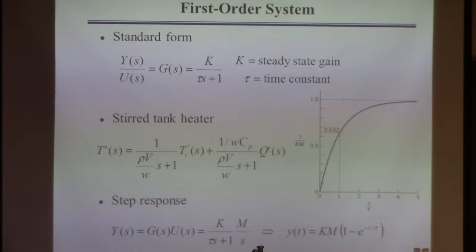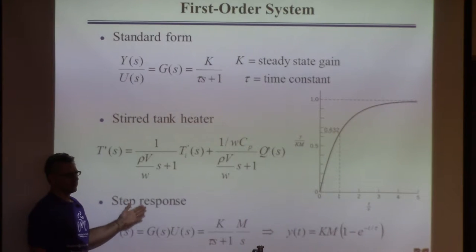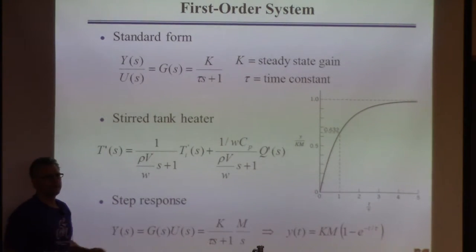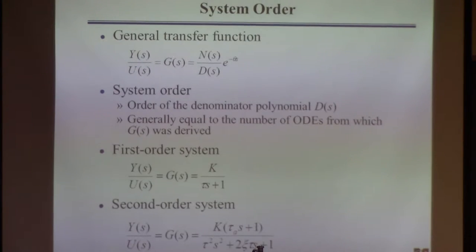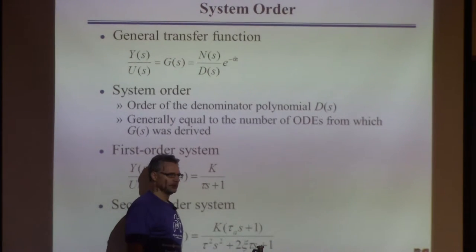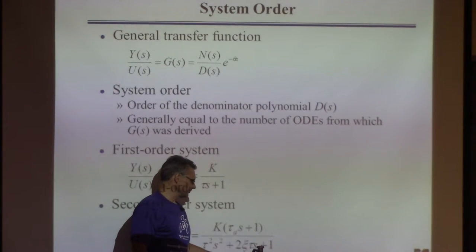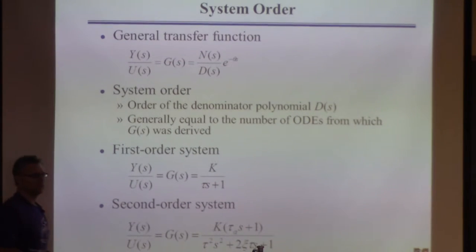The response is also a function of the magnitude of the step input M. If you have a specific problem and know K and tau for your problem, you can just use that answer. There's a squiggly next to tau — I'll explain what squiggly means in the future. The reason we call this a first-order system is because the denominator is first-order in s.